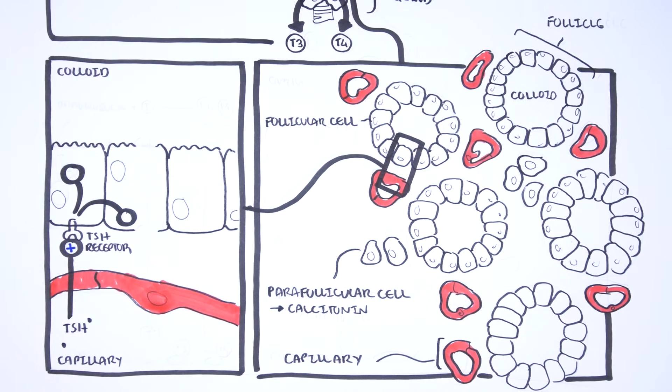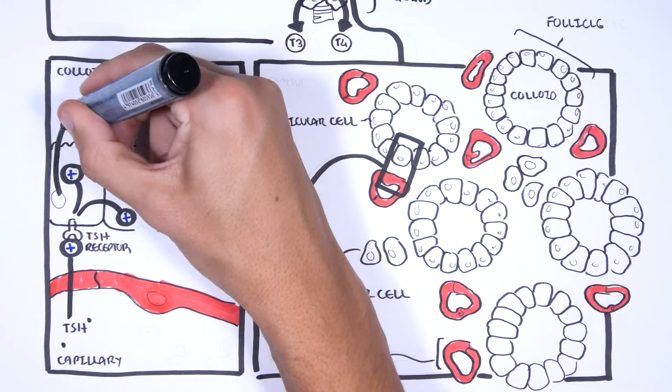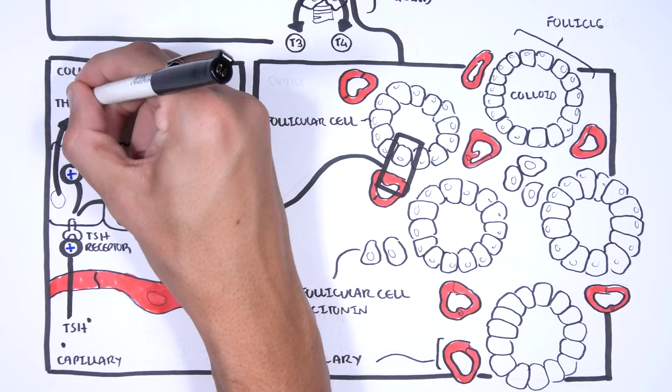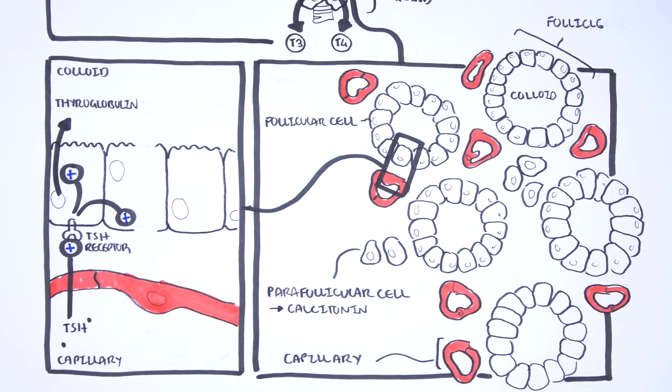Firstly, it will stimulate thyroglobulin production. Thyroglobulin will enter the colloid. Thyroglobulin contains tyrosine groups, which are important in making the thyroid hormones.